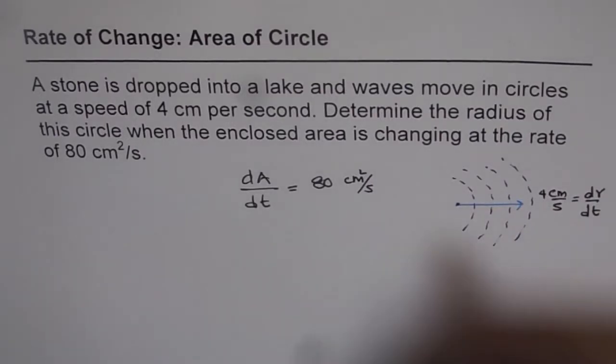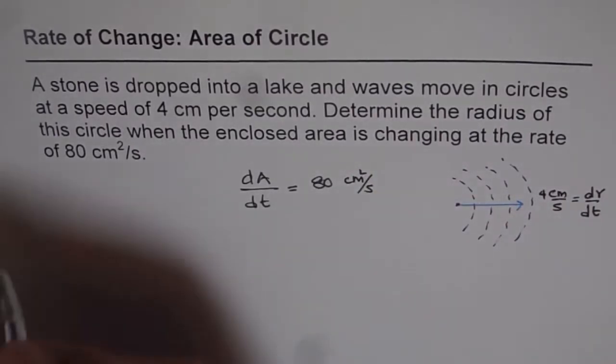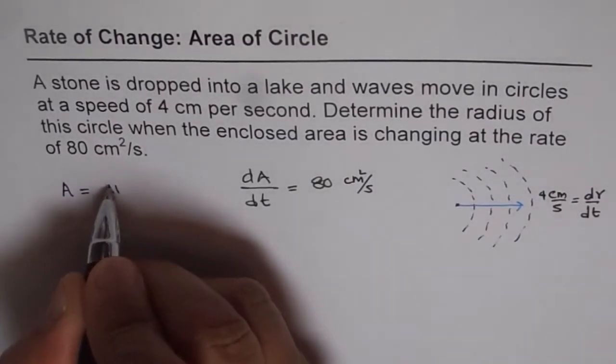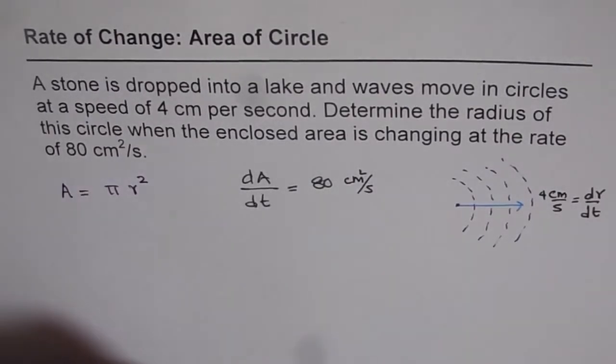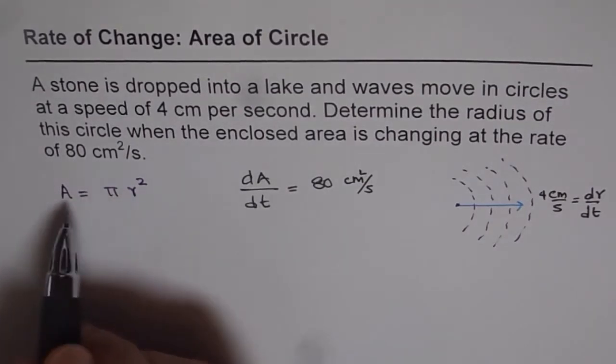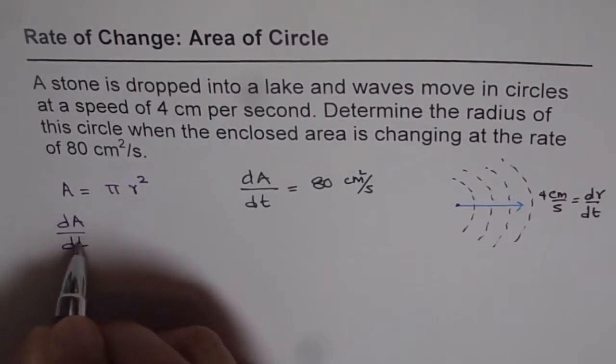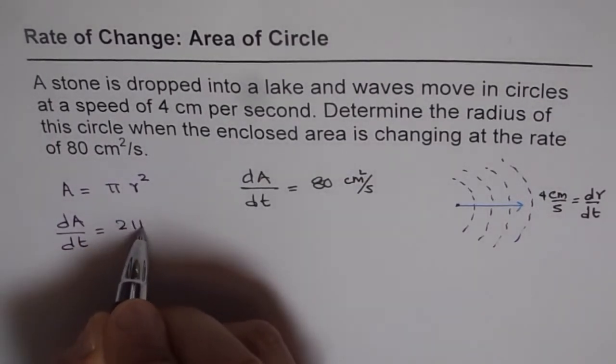We know area of a circle is equal to pi r squared. Now if I differentiate both sides by t, I get dA over dt equals to 2 pi r dr over dt.